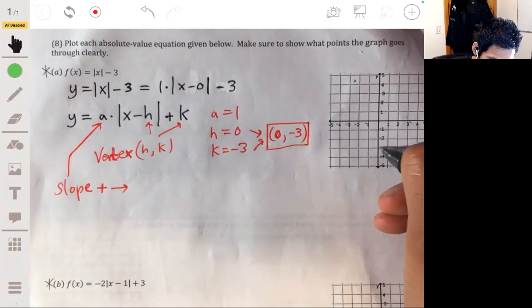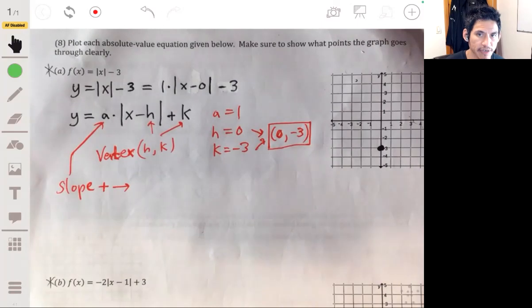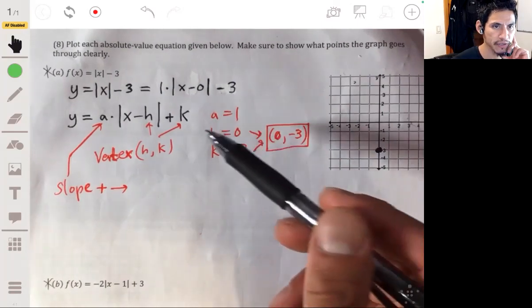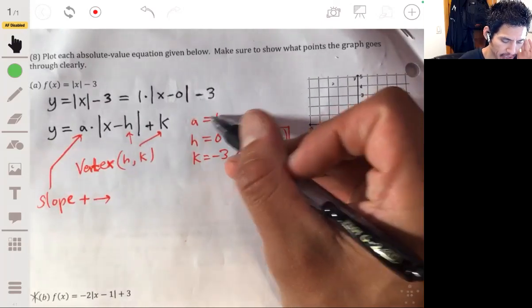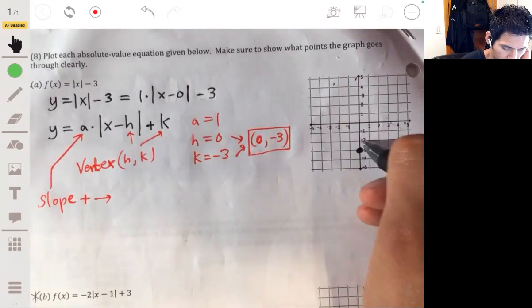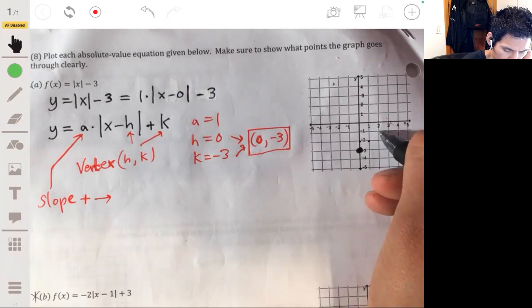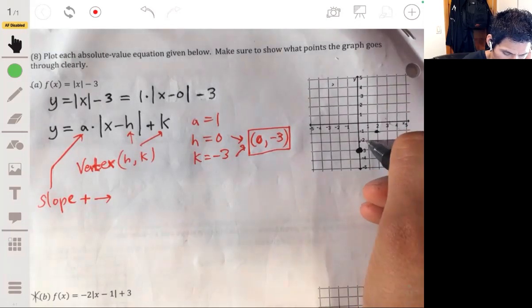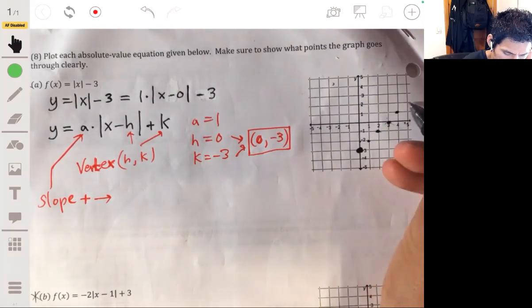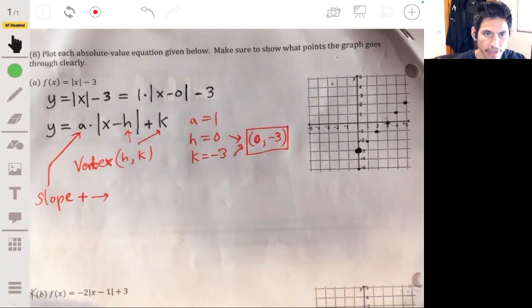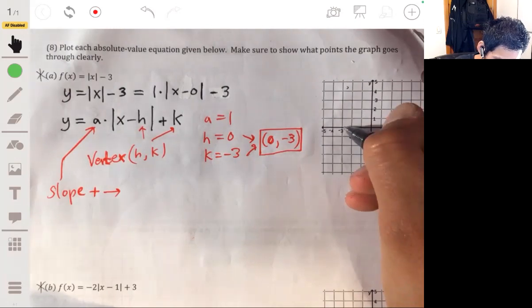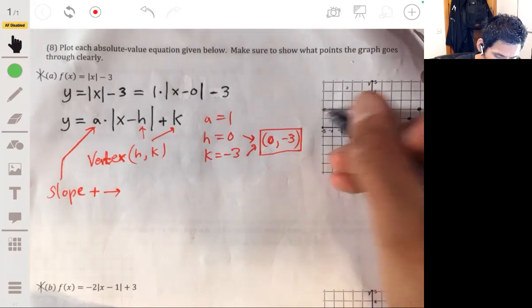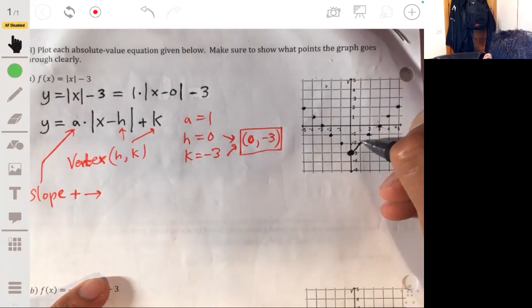So starting here, zero negative three. Now when I mean slope to the right or positive side, the slope or a is one. So from here we go up one to the right one, just like with a slope. And we're going to do this, and on the right we reflect - I mean on the left side we reflect it. And that's going to be your absolute value graph. It'll be a V-shaped graph.